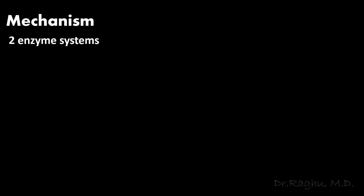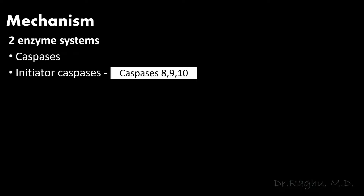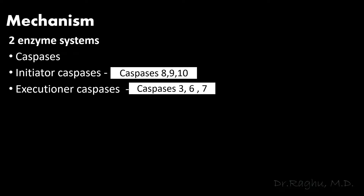To understand the mechanism, we must first know that there are two enzyme systems operating for apoptosis. The first is caspases, which are divided into two types: initiator caspases, which initiate apoptosis — these are caspases 8, 9, and 10 — and executioner caspases, which execute apoptosis — these are caspases 3, 6, and 7.